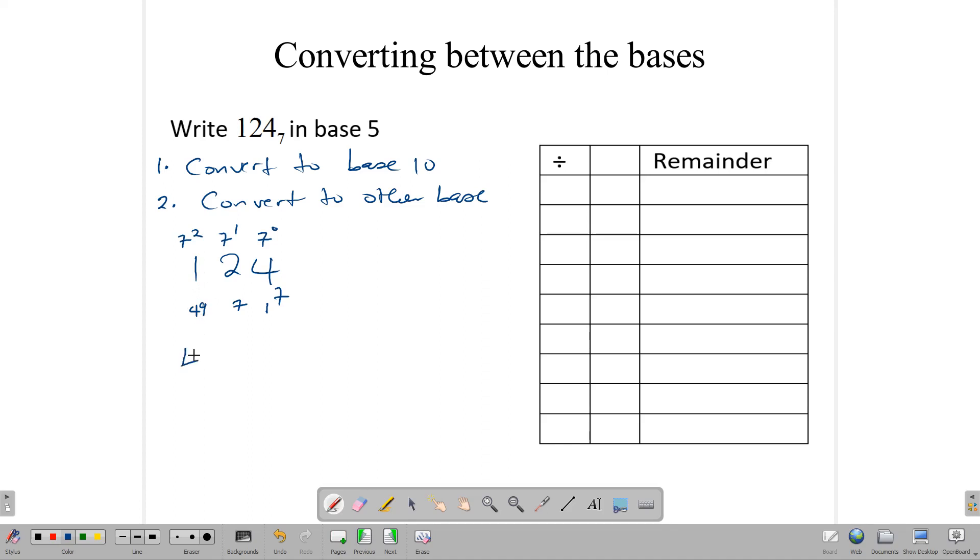So we have 4 in the 1s column, so it's 4 times 1, plus we have 2 in the 7s column, so it's 2 7s, and we have 1 times 49. So we have 4 times 1, we have 2 times 7, and we have 1 times 49. So this is 4, this is 14, and this is 49, and we are going to add these up. 9 plus 8 here gives us 17. And carrying a 1, 4 plus 1 plus 1 gives us 6.